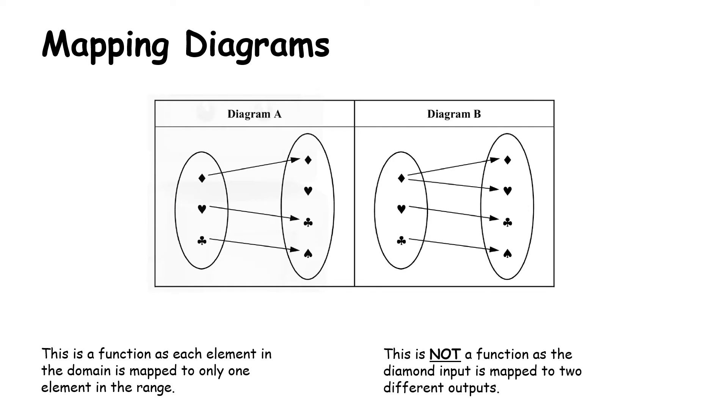Let's take a look at a mapping diagram. Here we are given two diagrams. Both of them look quite similar. We have a diagram A and a diagram B. It's important to note that in diagram A, that is a function. This is a function as each element in the domain is mapped to only one element in the range. Our focus is on our arrows. The arrows go one out and it will all land on our value.